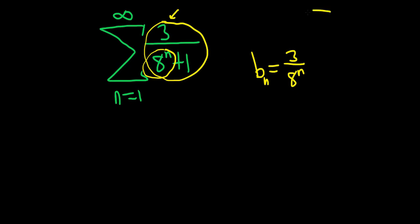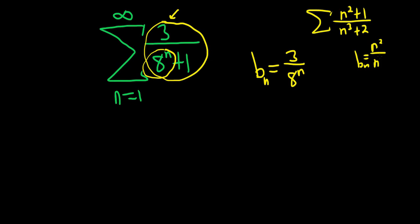For example, say you had n squared plus one over n cubed plus two. In that case your b sub n, you would just look at the leading terms: n squared over n cubed, so just one over n. That's pretty much how you can always get your leading terms — most of the time this will work.